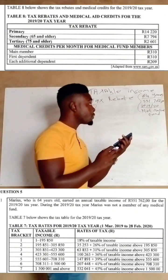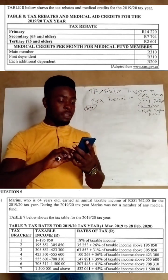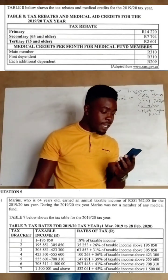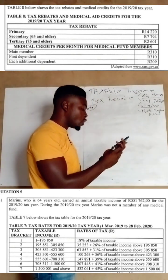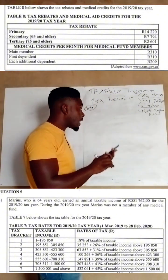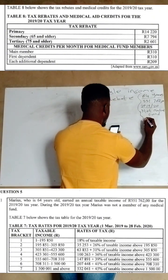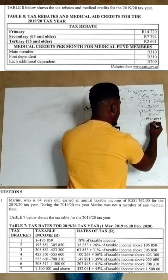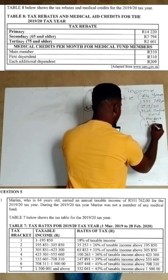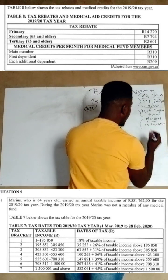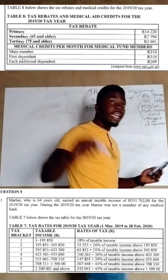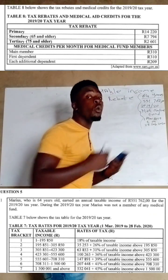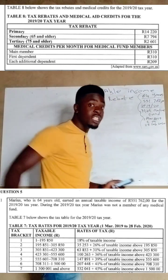Now let's go straight to the table. The tax rebate table for the 2019/2020 tax year covers from 1 March 2019 to 28 February 2020. It is important to know this because the question may ask how many months the taxable income covers.